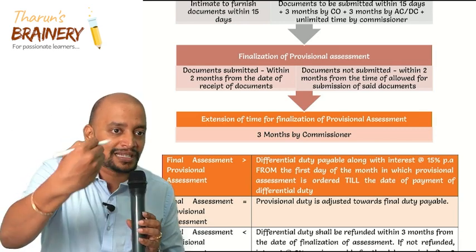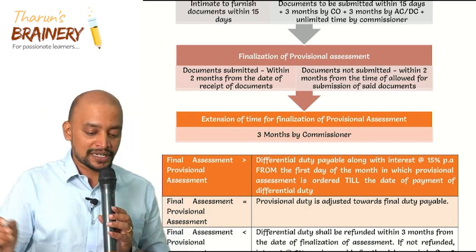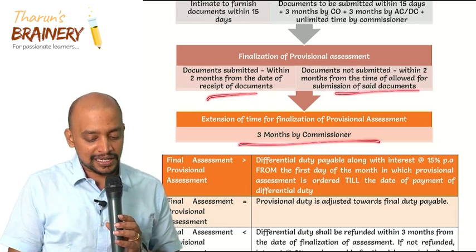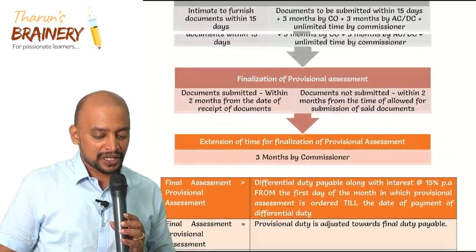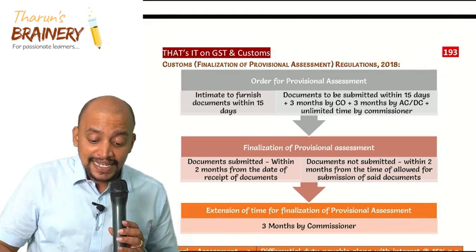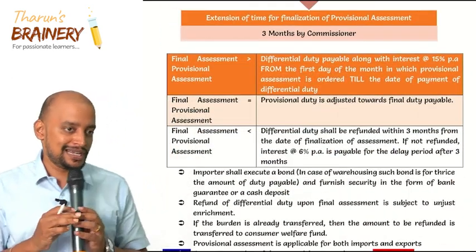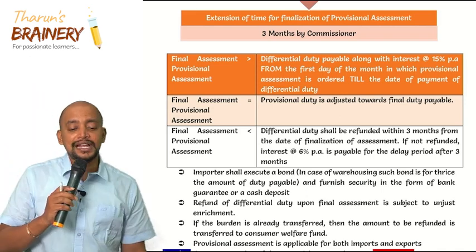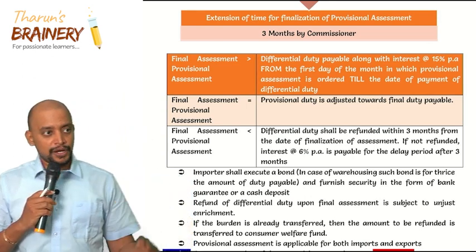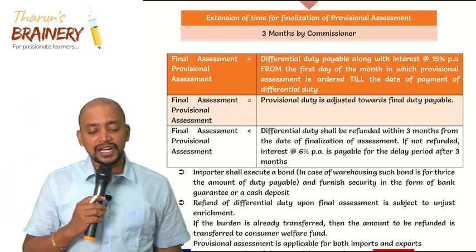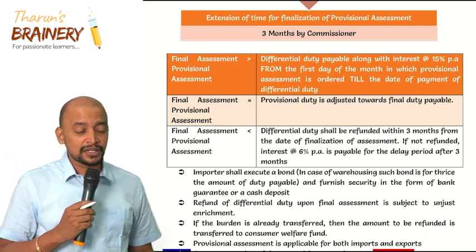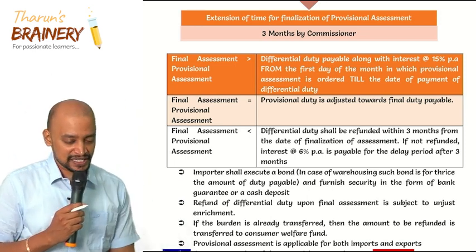There is a possibility of extension of the time for final assessment — plus 3 months by the Commissioner. However, this is just a procedural aspect and may not be tested, but interest provisions will be tested. Upon finalization of assessment, three things could happen: the final assessment amount may be greater than, equal to, or less than the provisional assessment amount.